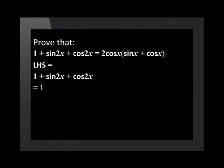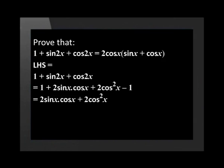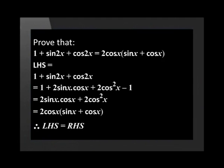Let's start with the left-hand side. Using the double angle identities, the left-hand side becomes 1 plus 2 sin x cos x plus 2 cos squared x minus 1. This simplifies to 2 sin x cos x plus 2 cos squared x. Now, let's take out 2 cos x as a common factor, so that we have 2 cos x in brackets, sin x plus cos x. Therefore, the left-hand side is equal to the right-hand side.